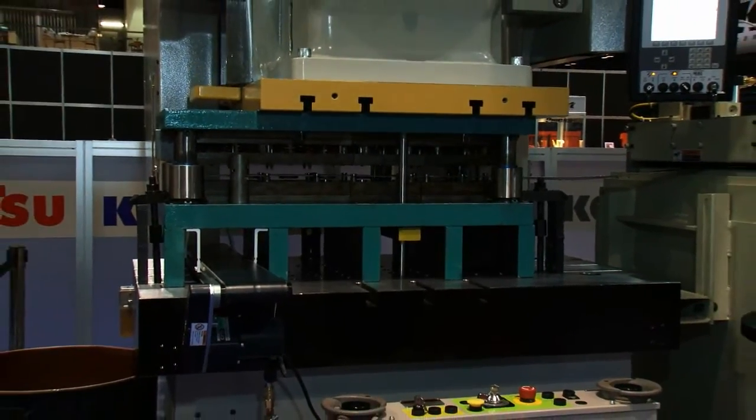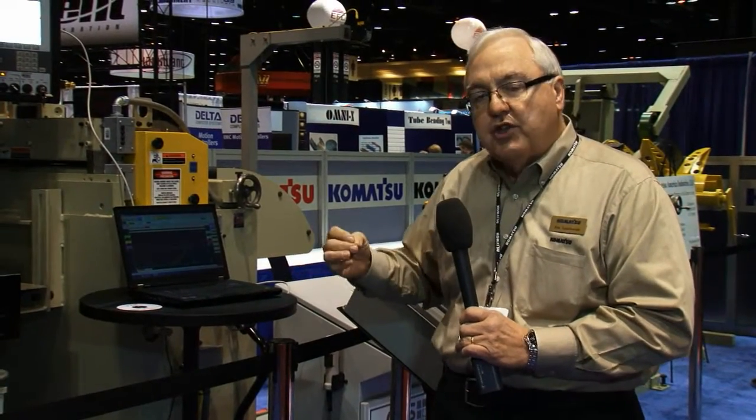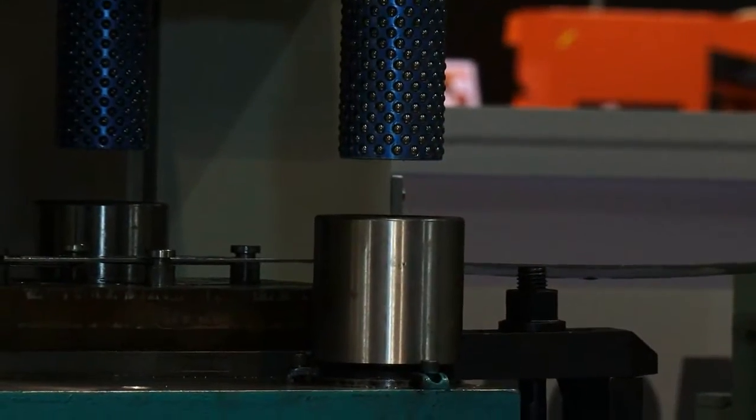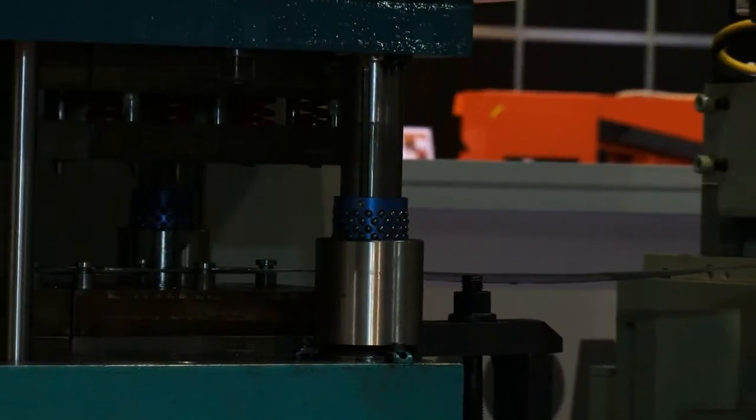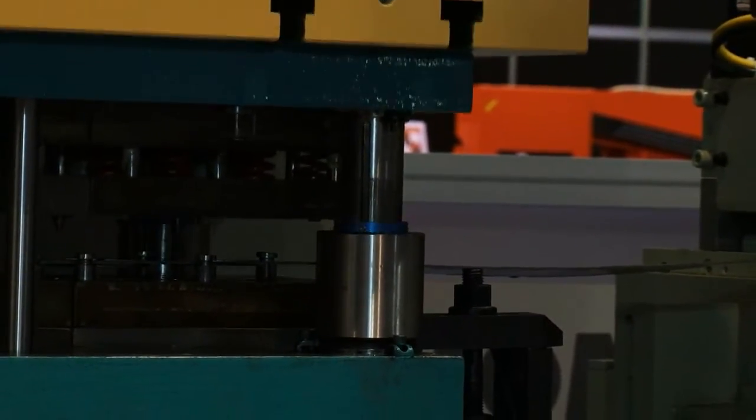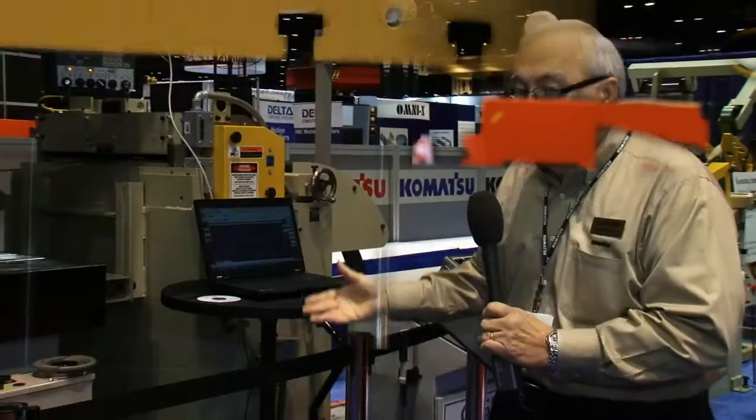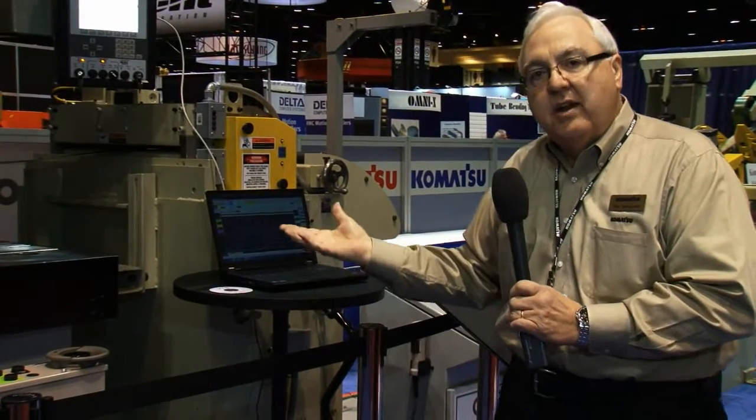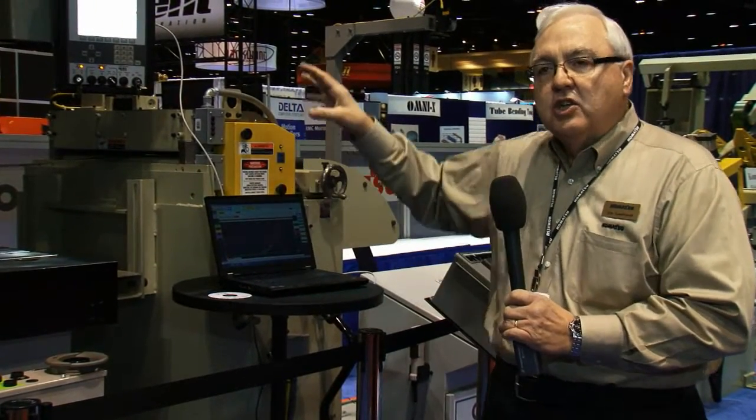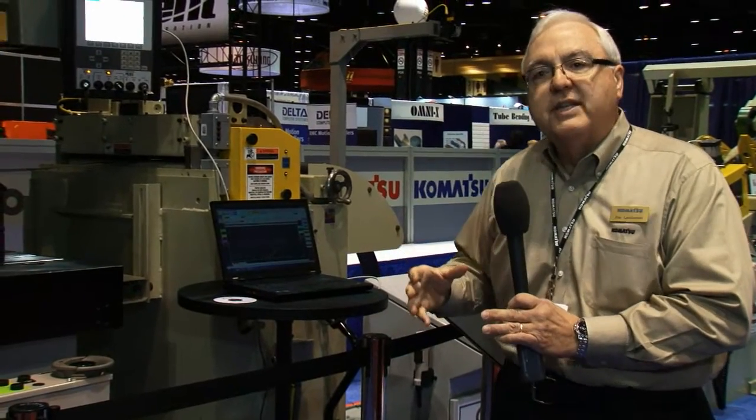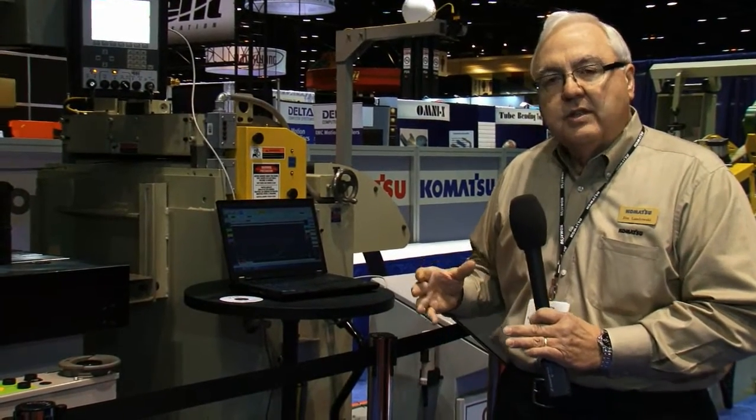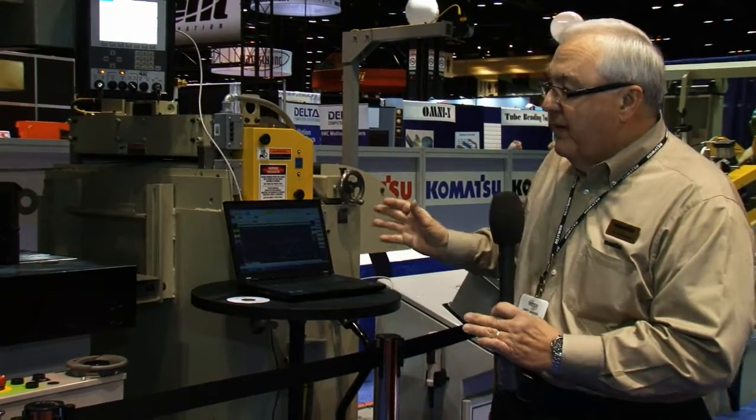So as the press comes down, it energizes the cushion, and you have the ability with the cushion to maximize the effects of the servo press as well. Not only does the servo press control its velocity and its energy, the die cushion also matches its energy and stroke with the press. So the press and the cushion become one system. That gives our stamping customers the flexibility to do more work within the same area.